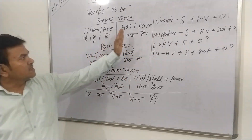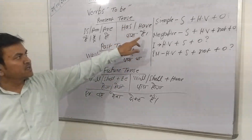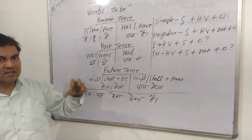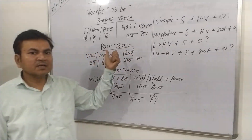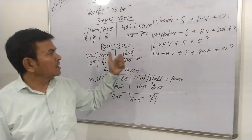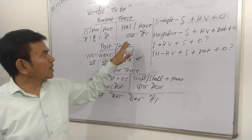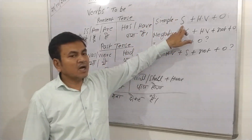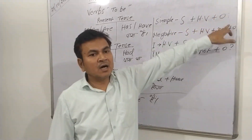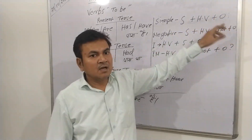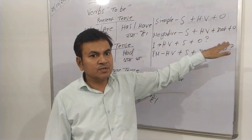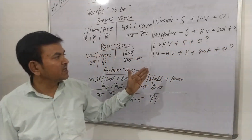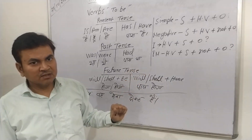Now come to this side — here for present tense using 'have'. The subject is 'I', the helping word is 'have', and the object is 'a house'. So the sentences become: 'I have a house', 'I have not a house', interrogative — 'have I a house?', and interrogative negative — 'have I not a house?'